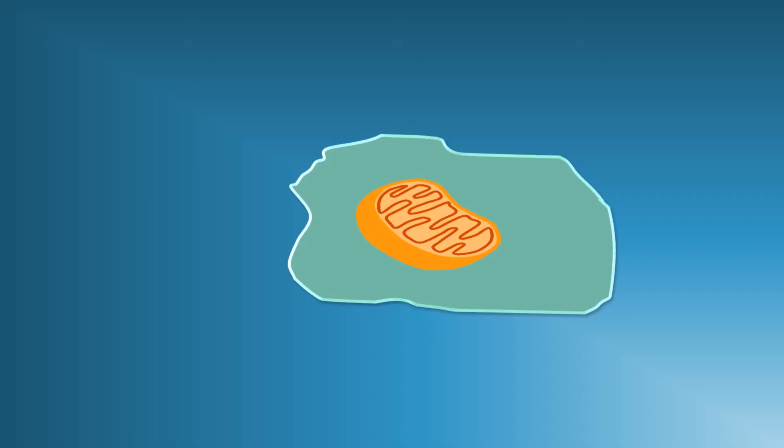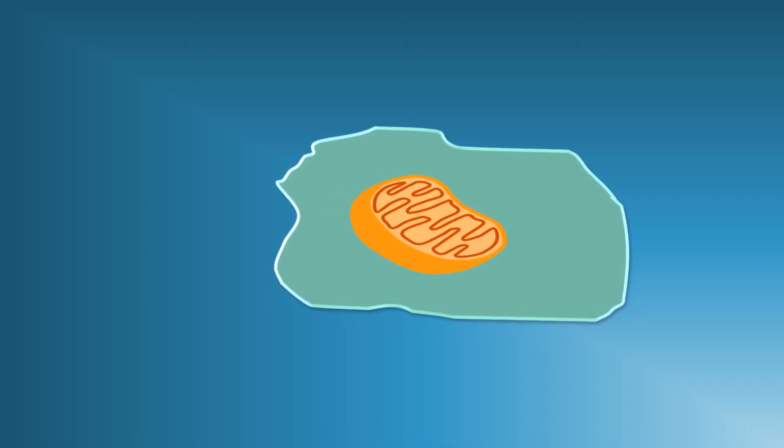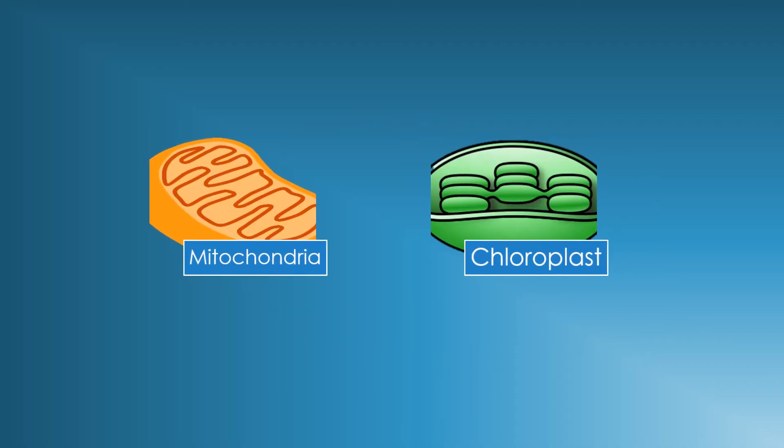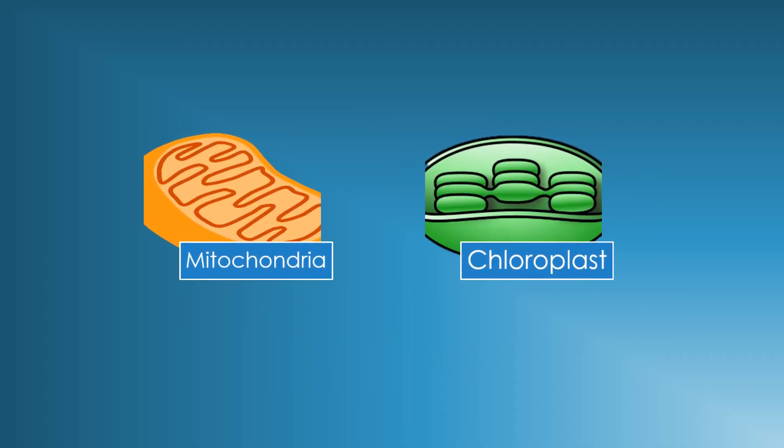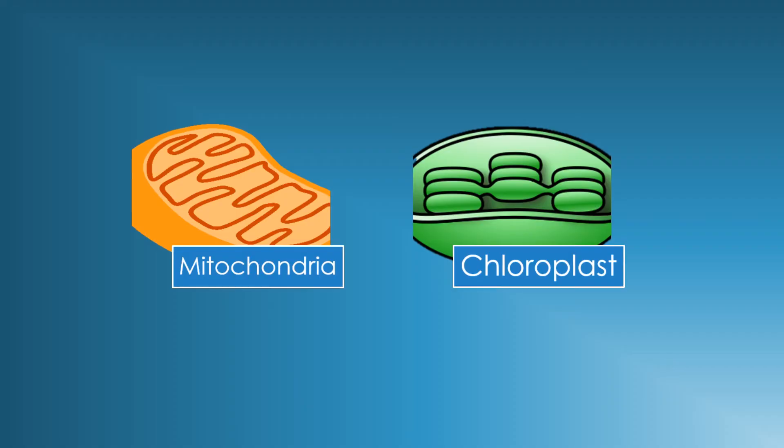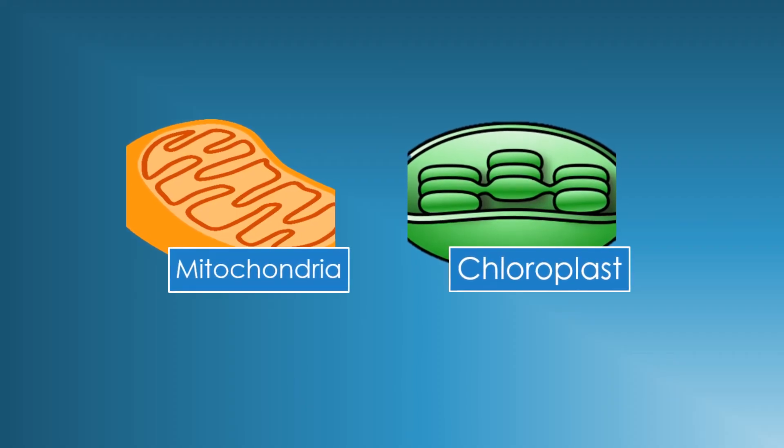The formation of eukaryotes led to the creation of multicellular organisms. It is believed that mitochondria and chloroplasts were their own cells. Evidence shows that mitochondria contain their own circular DNA genome and can reproduce.